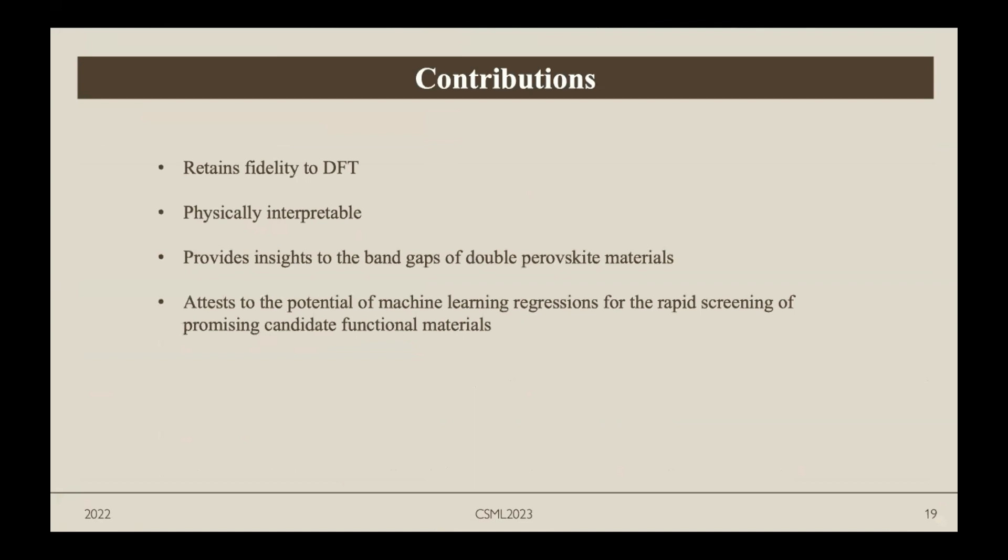The study is successful because we retained fidelity to DFT and our result is also physically interpretable. It provides insights to the band gaps of double perovskite materials because current information on double perovskites is very limited. Most importantly, this research attests to the potential of machine learning regressions for rapid screening of promising candidate functional materials.